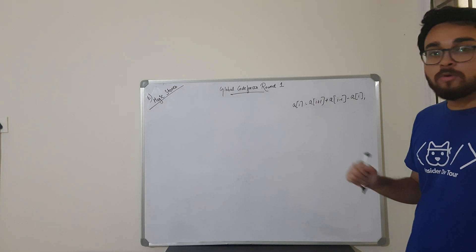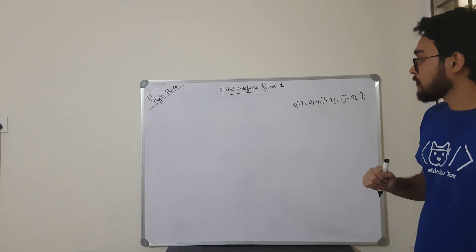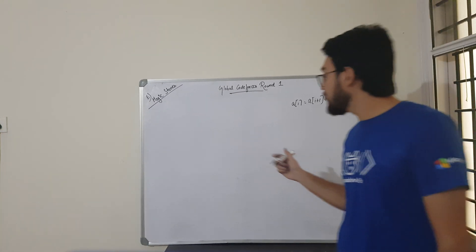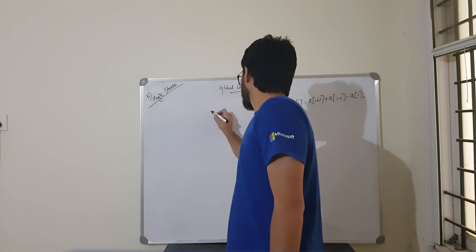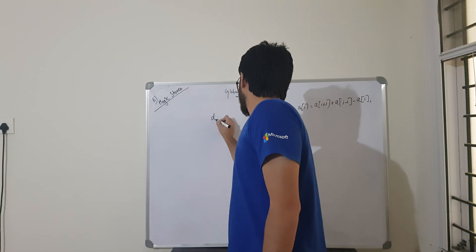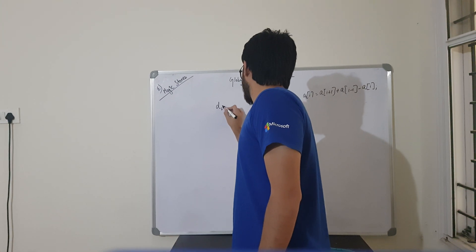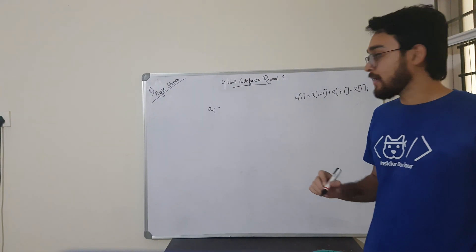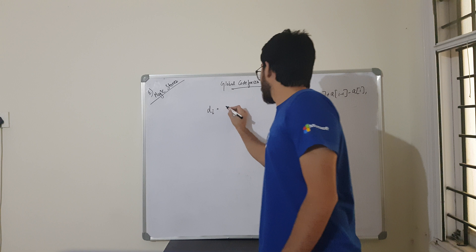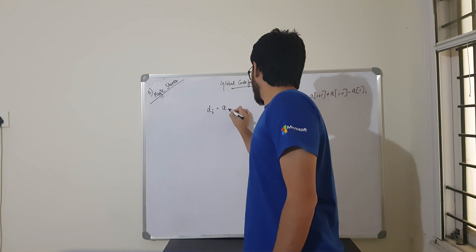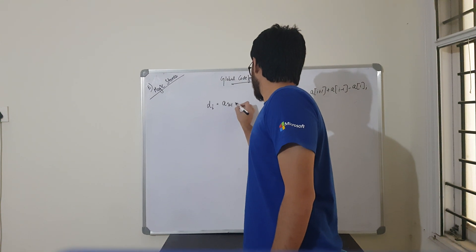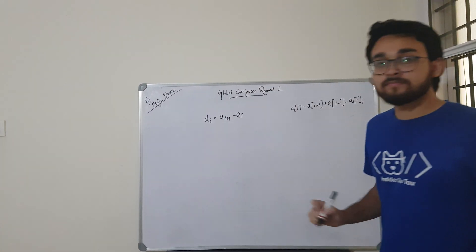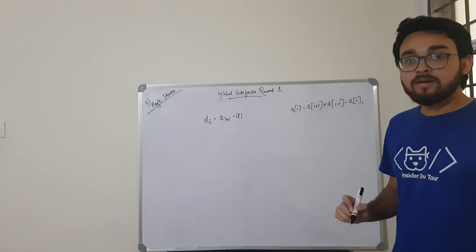How will you approach this problem? Let's form the difference array. The difference array D[i] is given by A[i+1] - A[i].